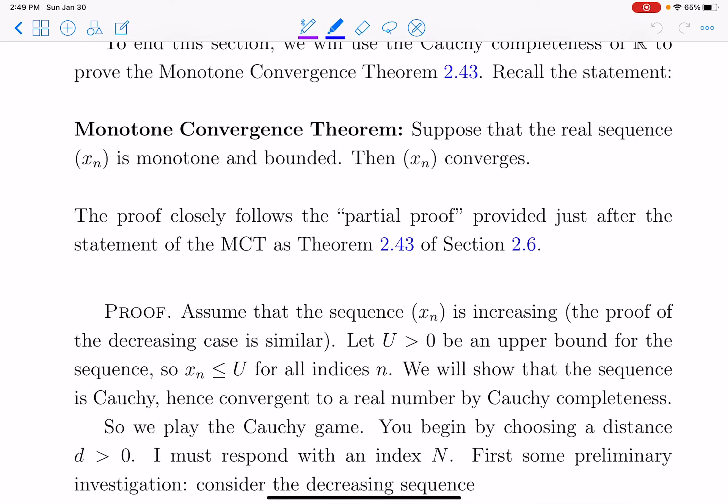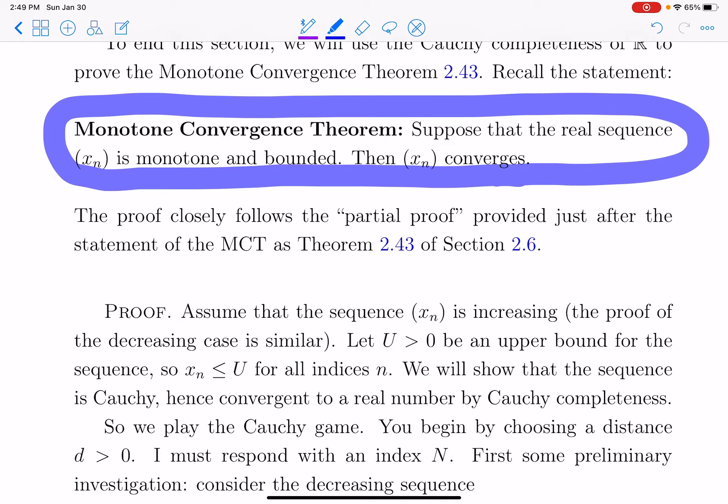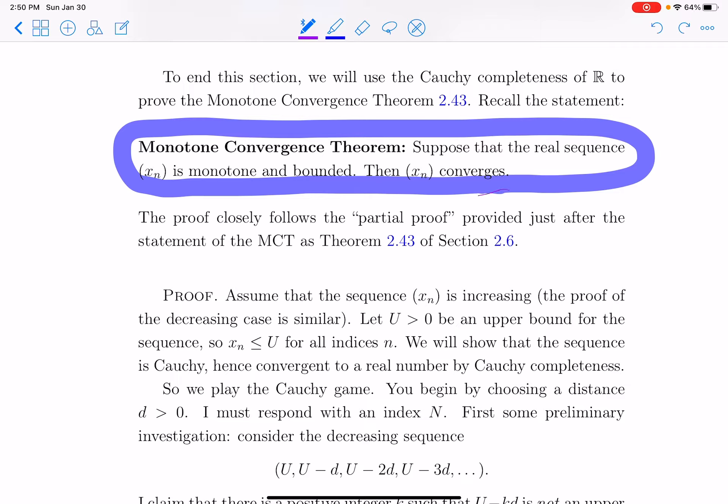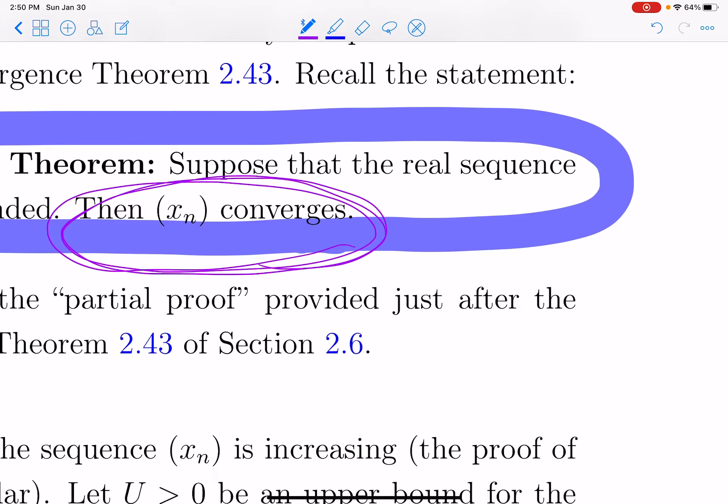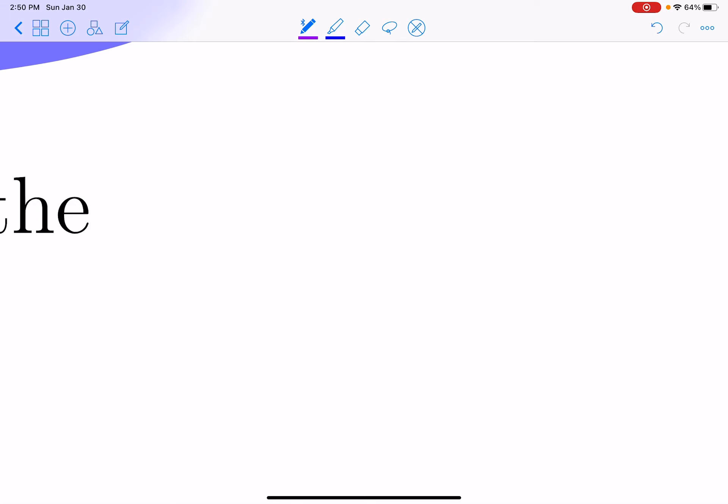Monotone convergence theorem, you need to prove it. Quiz yourself. Suppose that we have a monotone and bounded sequence in the real numbers. That's key. The real numbers. Then that sequence converges. Basically, because by definition, the reals are such that every Cauchy sequence converges. And so, the way you show that this sequence converges is not by playing the convergence game, but rather by showing that it's Cauchy. So you need to show that monotone and bounded real sequence implies that sequence is Cauchy. That's what you need to show.